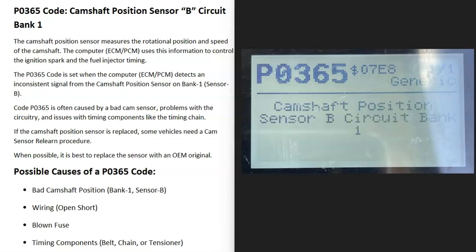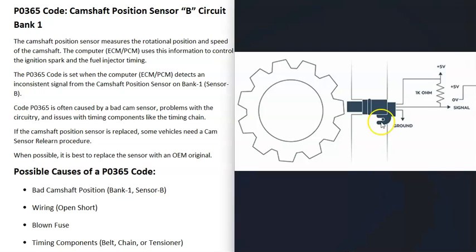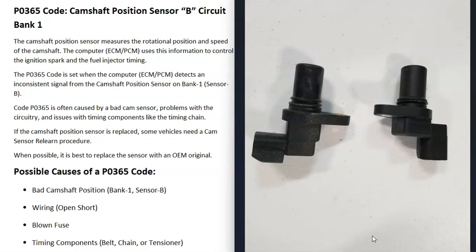Today I'm talking about a P0365 code — what it is and how you go about fixing it. The P0365 code is a camshaft position sensor B circuit, bank one. Basically, there's a camshaft position sensor — or sensors, as there could be more than one — that monitors the camshaft as it spins and reports this information back to the computer. When you get a P0365 code, the computer is seeing that this sensor is having some kind of problem.